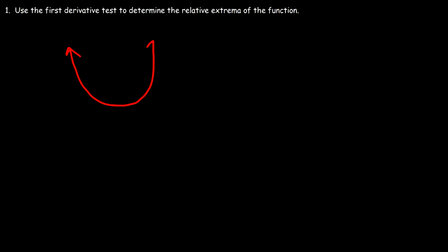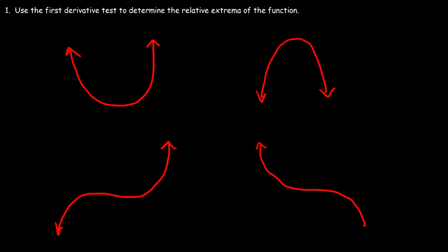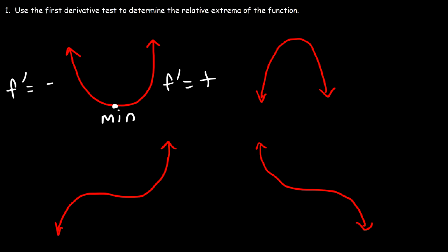Here is a relative minimum, and this is a relative maximum, and this graph has no relative minimum or maximum. For the first one, on the upper left corner, notice that on the left side of the minimum, the function is decreasing — decreasing when the first derivative is negative — and here the function is increasing, increasing when the first derivative is positive. So according to the first derivative test, if the sign of the first derivative changes from negative to positive, then you have a minimum.